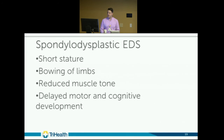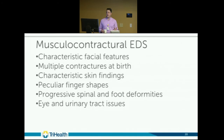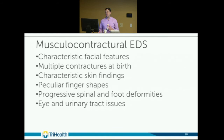Musculocontractural EDS features characteristic facial features, multiple contractures of large joints at birth, characteristic skin findings including fine palmar creases and peculiar finger shapes, progressive spinal and foot deformities, and eye and urinary tract issues.